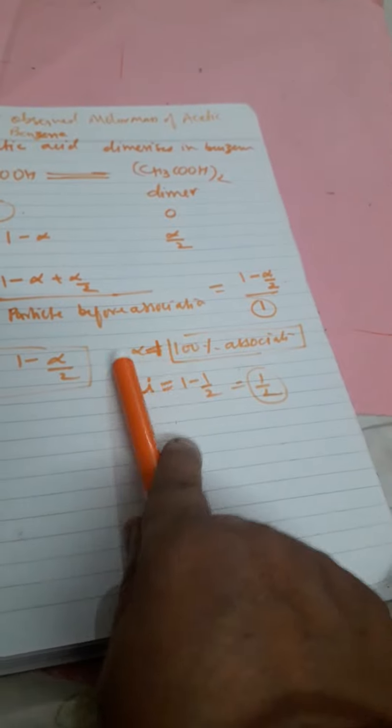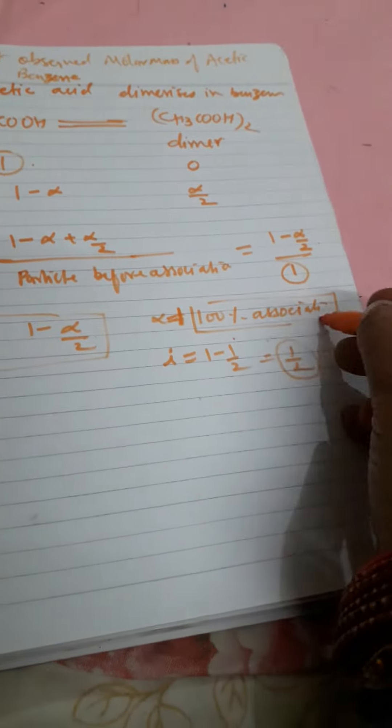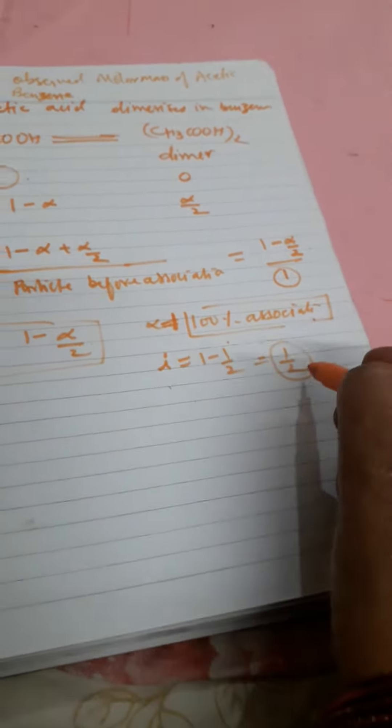Why is it so? Because alpha is equal to one, we are saying 100% associated. So I is equal to half.